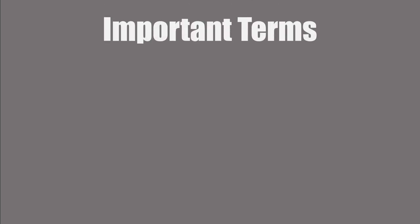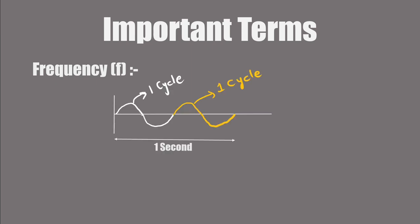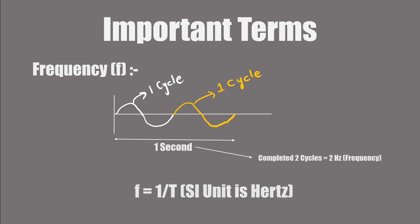Another essential concept related to periodic motion is frequency, denoted by the symbol F. The frequency represents the number of cycles completed by an object in one second. The frequency is the inverse of the time period and is measured in hertz.